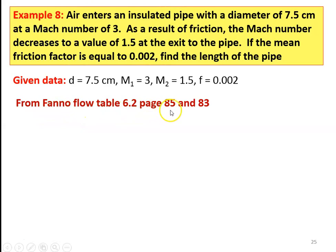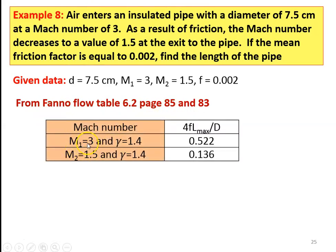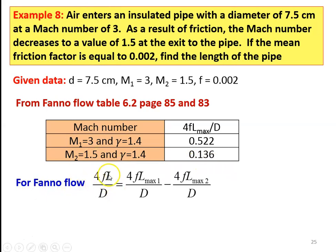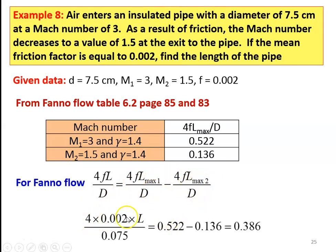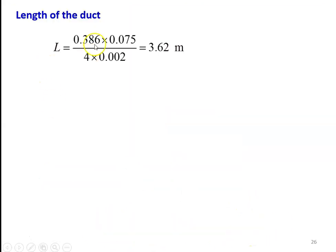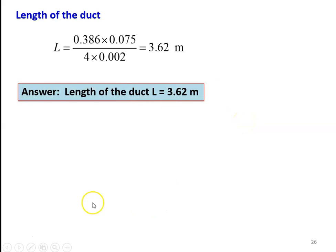From the fanno flow table, table 6.2, page numbers 85 and 83, gamma equal to 1.4: for M1 equal to 3, 4FL max by D equal to 0.522; for M2 equal to 1.5, 4FL max by D equal to 0.136. Using 4FL by D equal to (4FL max 1 by D) minus (4FL max 2 by D): 4 into 0.002 into L divided by 0.075 equal to 0.522 minus 0.136, equal to 0.386. Length equal to 0.386 into 0.075 divided by 4 into 0.002, equal to 3.62 meters.